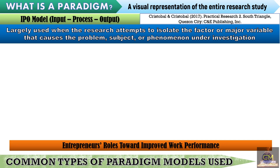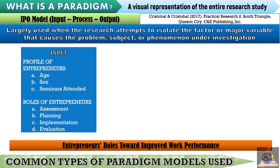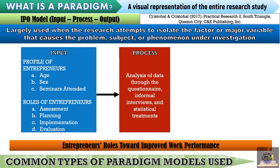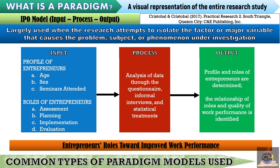As an example, we have the entrepreneurs' roles towards improved work performance. For our input, we include the profile of the entrepreneurs which involves their age, sex, and seminars attended, as well as the roles of the entrepreneurs in terms of assessment, planning, implementation, and evaluation. For the process, we have analysis of data through questionnaires, informal interviews, and the statistical treatments needed for analyzing the data. For the output, this would be the final outcome of the study once the data has been gathered and analyzed — specifically, the profile and roles of entrepreneurs are determined, and the relationship of the roles and quality of work performance is further identified.